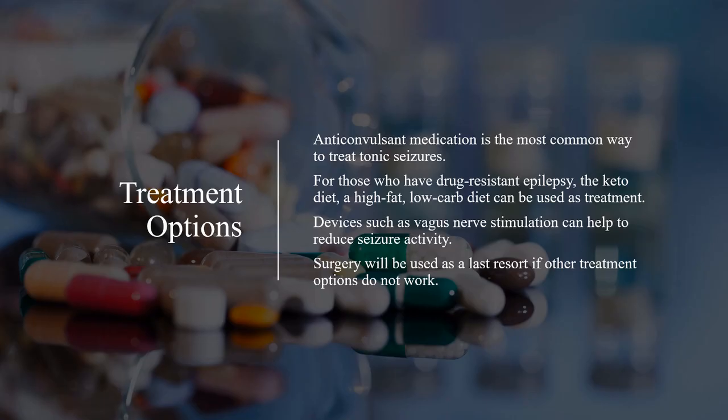Anticonvulsant medication is the most common way to treat tonic seizures. For those who have drug-resistant epilepsy, the keto diet — a high fat, low carb diet — can be used as treatment. Devices such as vagus nerve stimulation can help to reduce seizure activity. Surgery will be used as a last resort if other treatment options do not work.